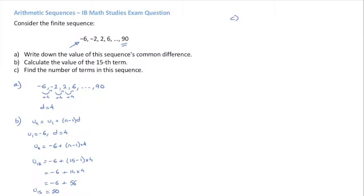So to figure out how many terms are in the sequence, we need to figure the value of N, which leads to the nth term being equal to 90. That's, we know that the nth term UN is equal to negative 6 plus N minus 1 times 4.